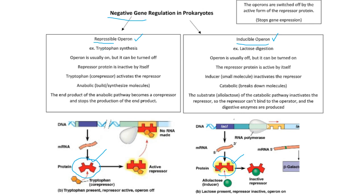With a repressible operon, the example we used was tryptophan synthesis. With this kind of operon, the operon is usually on, meaning the repressor is made in an inactive form all by itself. Then you have the product of this whole anabolic cascade, and that's what goes ahead and activates this repressor. So tryptophan acts as a co-repressor and activates the repressor. This is usually anabolic — you build or synthesize molecules like tryptophan. The end product of the anabolic pathway becomes a co-repressor and stops the whole production of tryptophan in the first place.